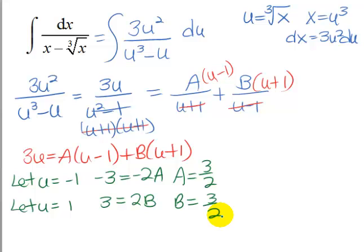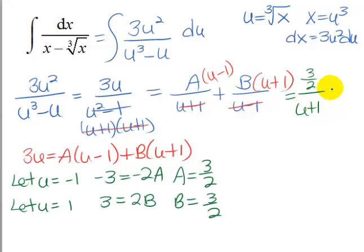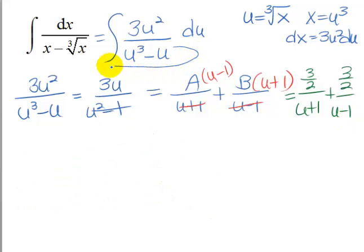So now we are ready to go up here and write this down as our partial fractions. Actually I'm going to put the partial fractions right here and then we will go ahead and replace. So this is going to be 3 halves over u plus 1 plus 3 halves over u minus 1.